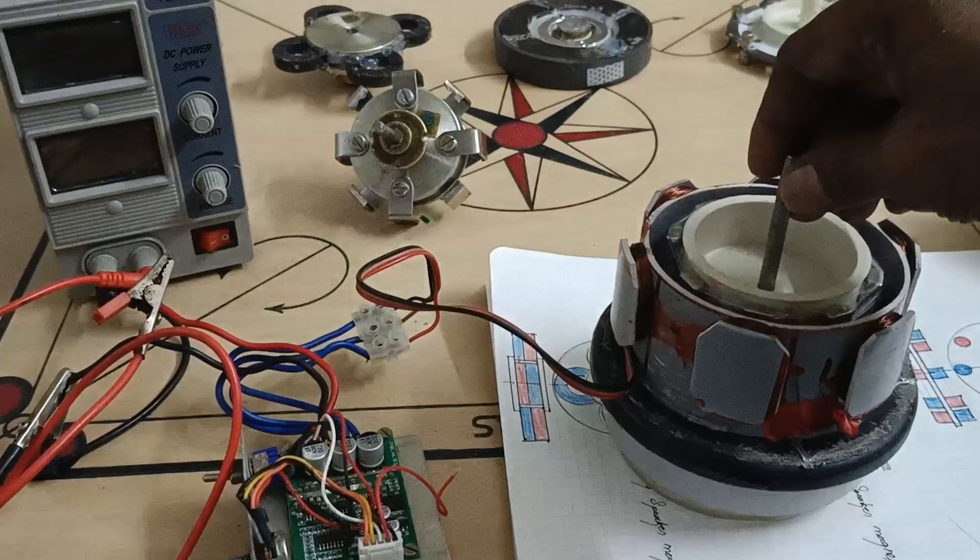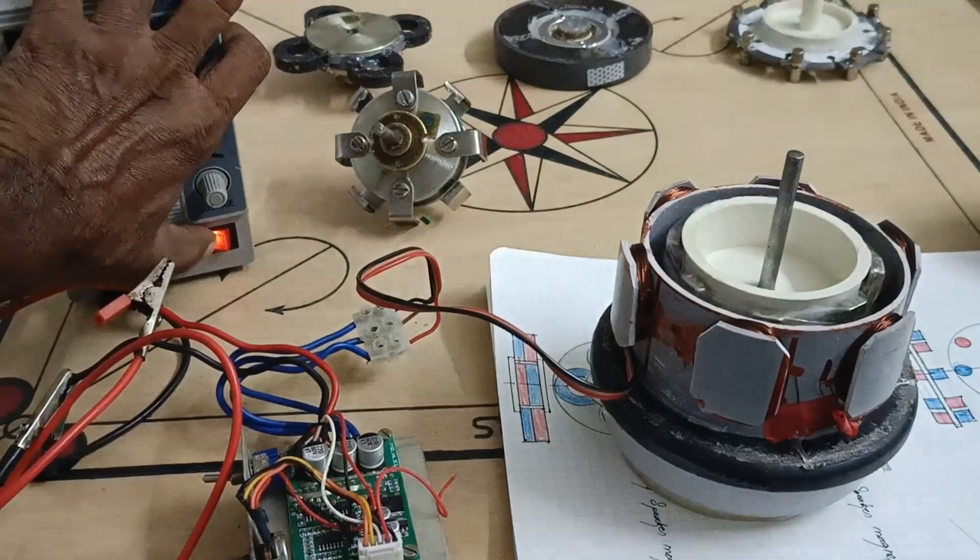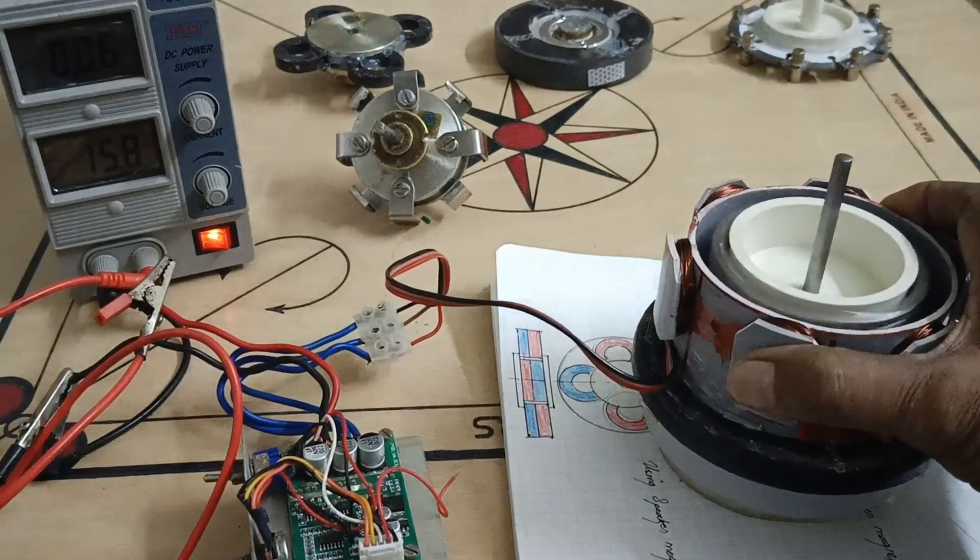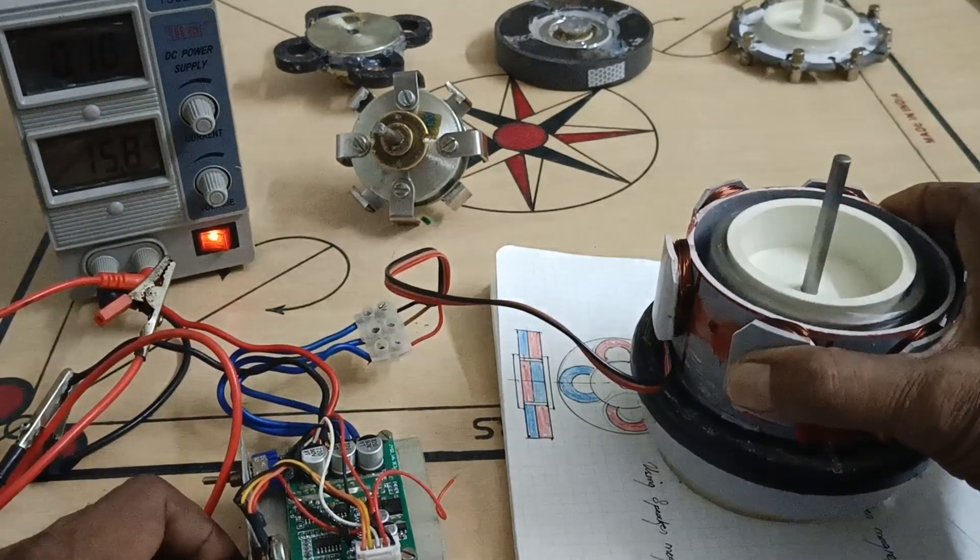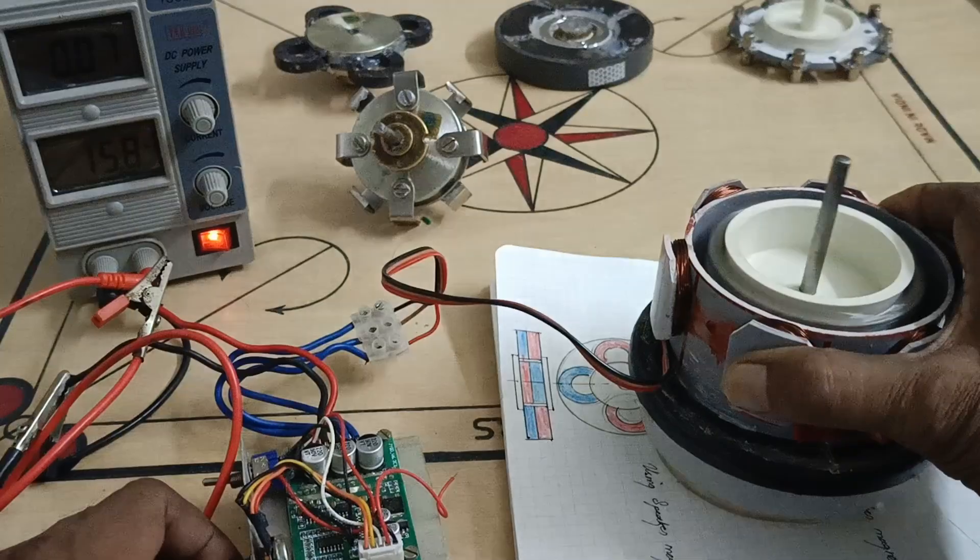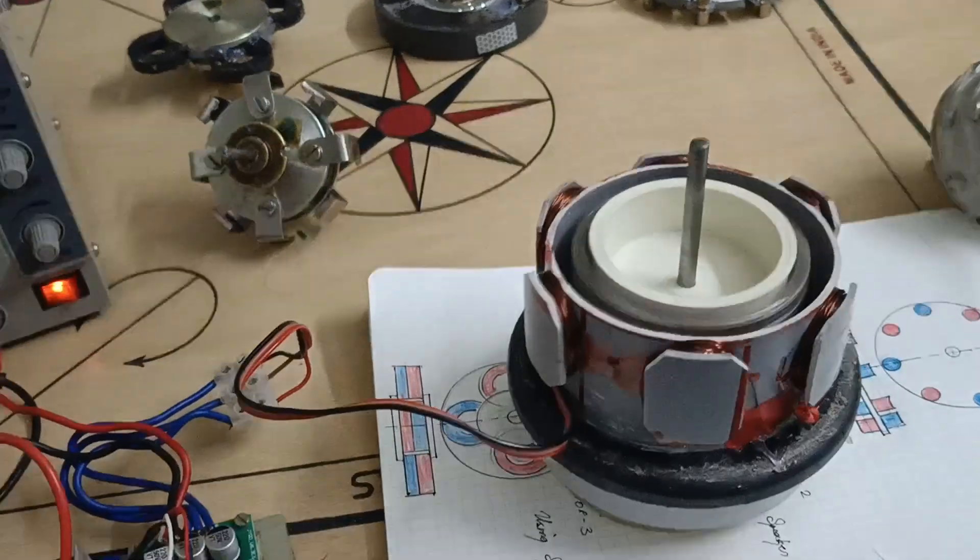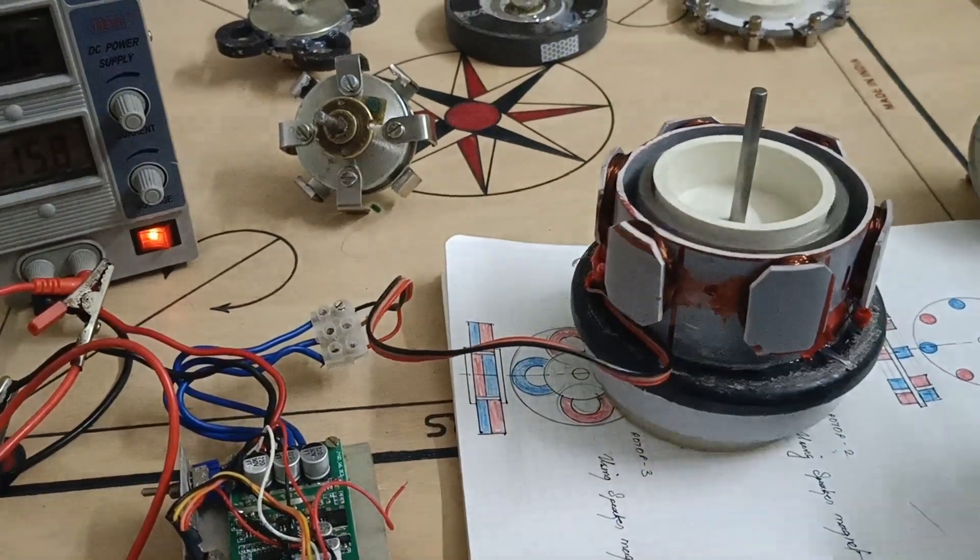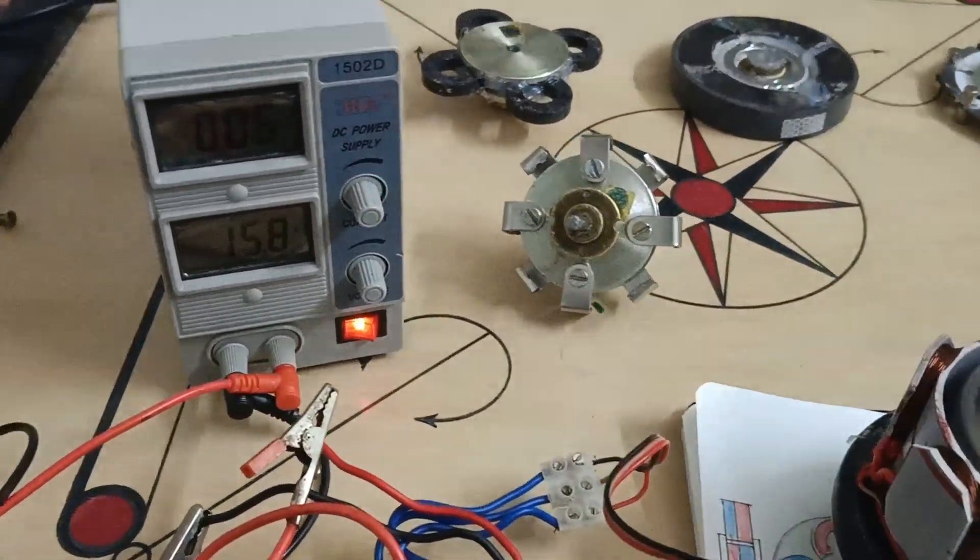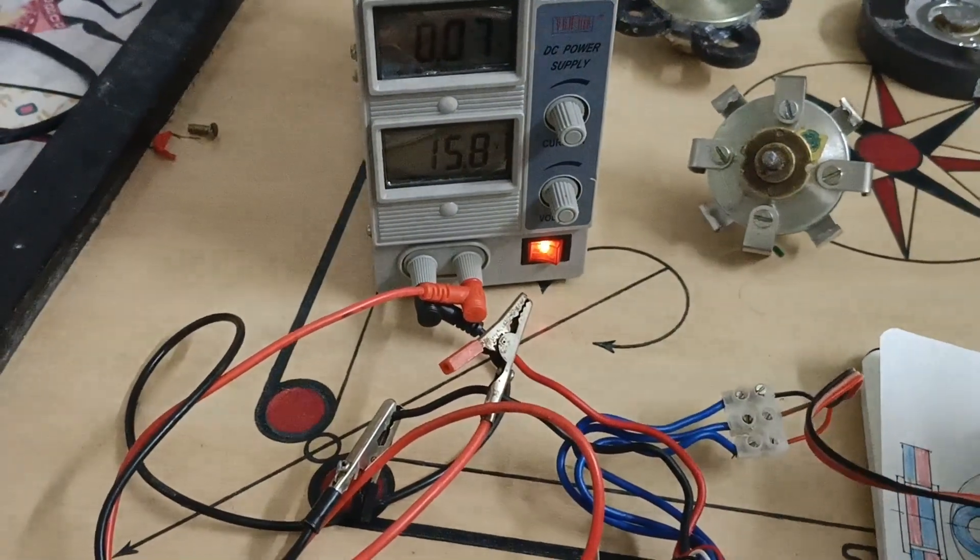Now I'm going to start the sixth motor. Here the motor is running. Voltage sixteen volts, current consumption zero point zero six amps.